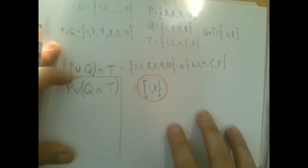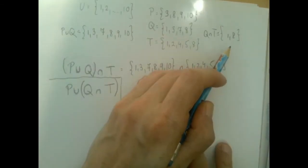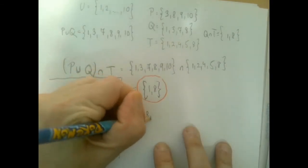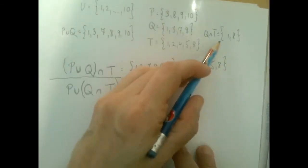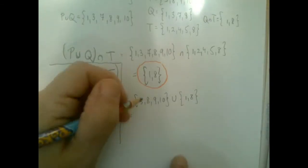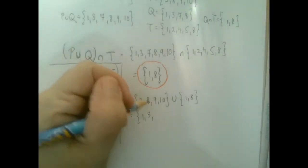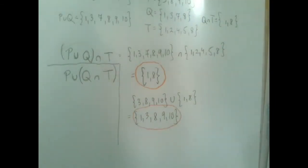So, when you have unions and intersections in the same computation, you have to be careful because order of operations do matter. So, when you have more sets and more operations, you just do one operation at a time.